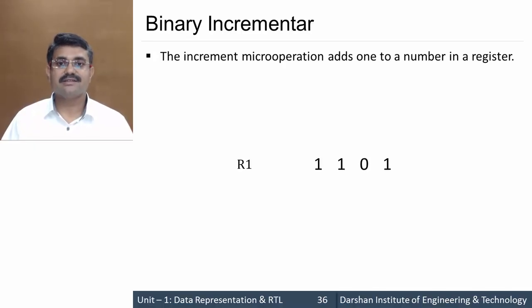Let's see an example. Suppose we have register R1 which contains 1101. We want to add 1 to this content so it becomes incremented. So let us add 1 to it.